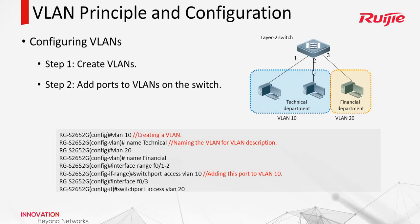For now, ports 1, 2, and 3 belong to VLAN 1, so we must change that. We can use the command 'interface range F1 and F2' — the interface range command lets us enter both interfaces at once and apply commands to both. Then the command 'switchport access VLAN 10' adds those ports into VLAN 10. Then for interface 3, we add it to VLAN 20.